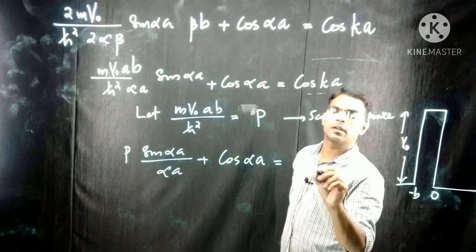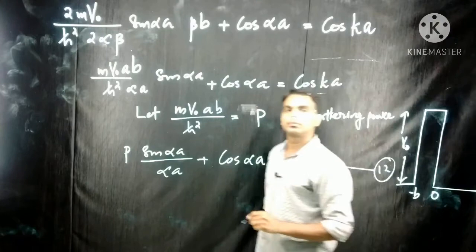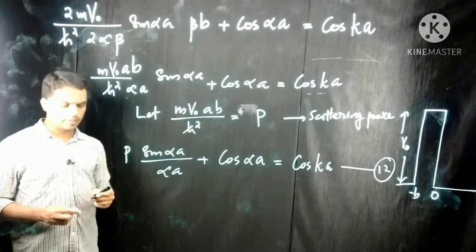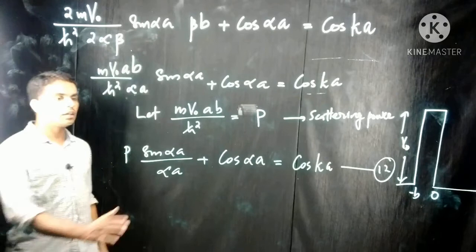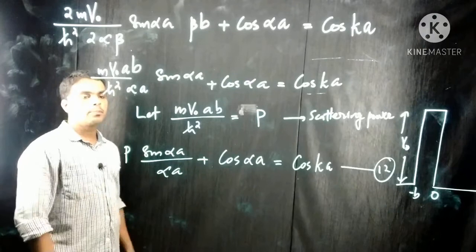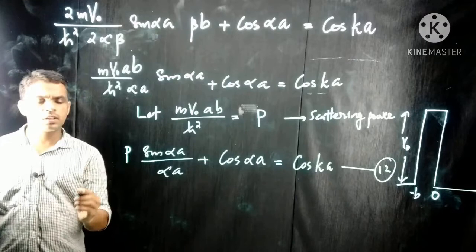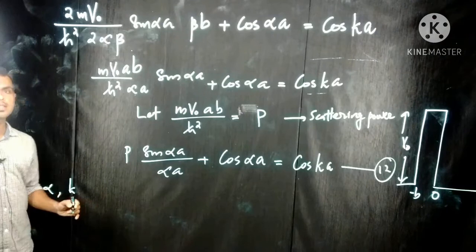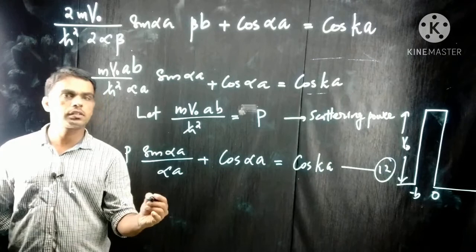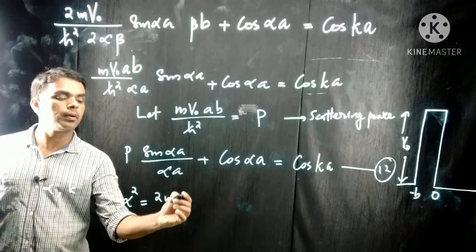So we write equation 12 as: P·sin(αa)/(αa) + cos(αa) = cos(ka). This is a simple equation. The right-hand side is cos(ka), and the left-hand side has two terms: P·sin(αa)/(αa) and cos(αa). There are two variables, α and k.